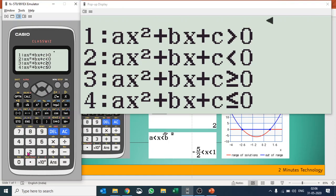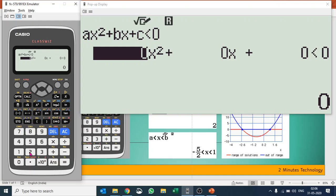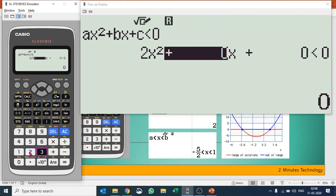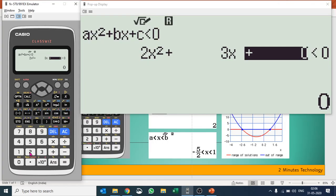I'll use format number 2, and I'll put in the coefficients. The coefficient of x² is 2, coefficient of x is 3, and my constant term is -5. I'll put in -5, less than 0.